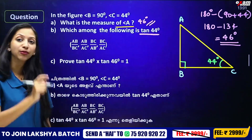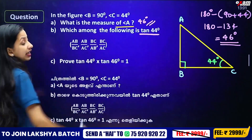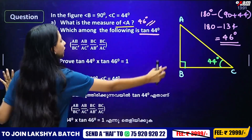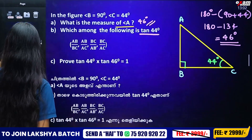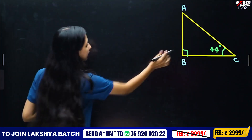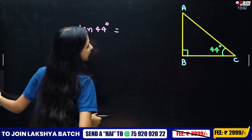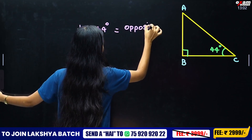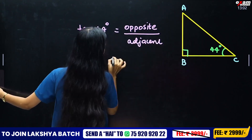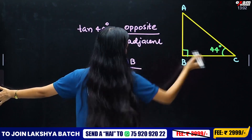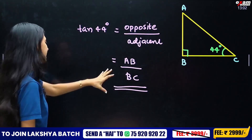Now, what is tan(44°)? Tan is opposite divided by adjacent. For angle 44° in triangle ABC, the opposite side is AB and the adjacent side is BC. So tan(44°) = AB/BC.